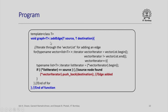The add edge function is defined as void, taking T source and T destination as parameters. We iterate through the vector list to find where T source is located. Using the same iterator loop, if the list iterator is equal to source — meaning we have found the source node — we say push back destination. This push back automatically inserts the destination node subsequent to the source or any previously added edge, due to the property of the STL function. This simple push back adds the edge from T source to T destination.